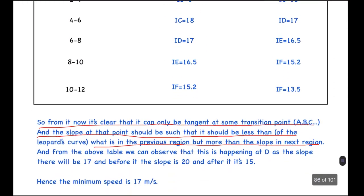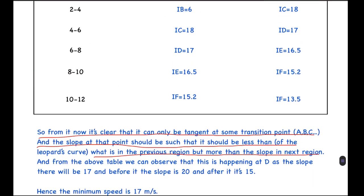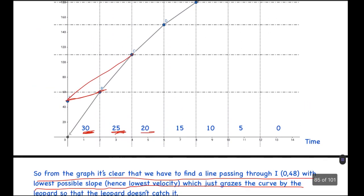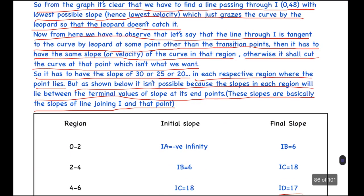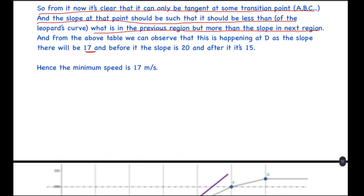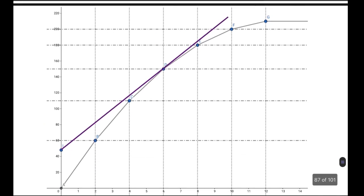But we can see that only one value satisfies in this, which is the ID, which has a slope of 17, as we saw here. And the value of ID has to lie between—at this point it has to lie between 20 and 15, and it's satisfying. So that's the only possible answer in this case. Hence, the minimum speed required will be 17 meters per second, as that's the tangent. And here we can see that in the critical case or in the extreme case, the deer will go along this line and the cheetah will go along the curve. So it has to have a minimum velocity of 17 meters per second.